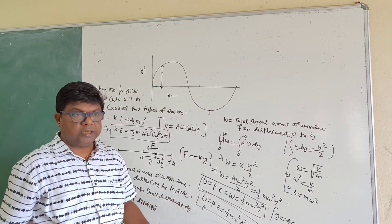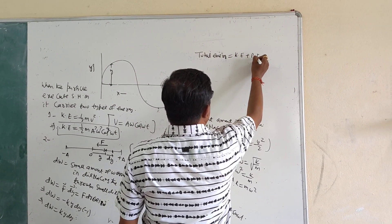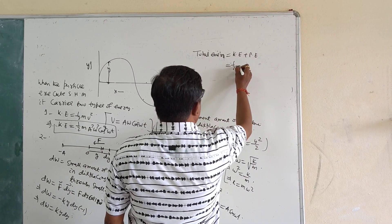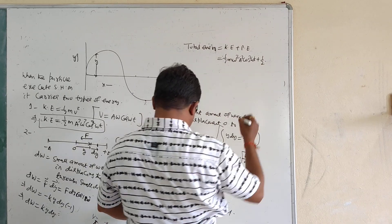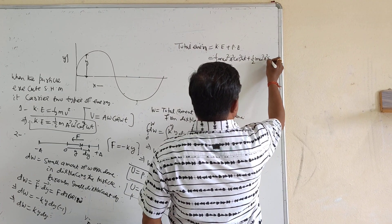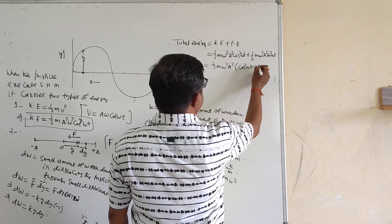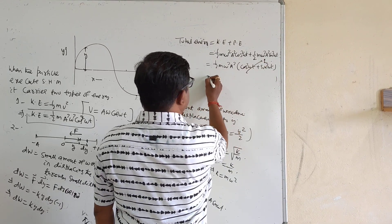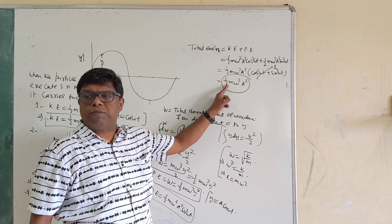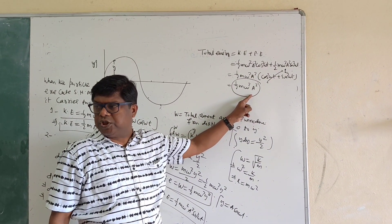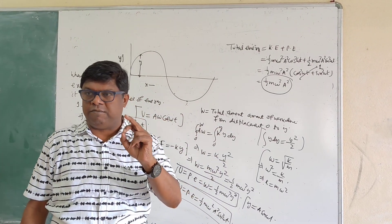Total energy of the particle executing SHM is the sum of kinetic energy and potential energy: E = ½mω²A²cos²(ωt) + ½mω²A²sin²(ωt) = ½mω²A²(cos²ωt + sin²ωt) = ½mω²A². Where m is the mass, ω is the angular frequency, and A is the amplitude.